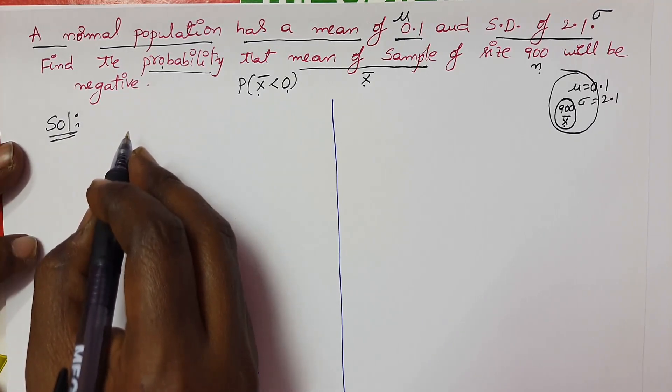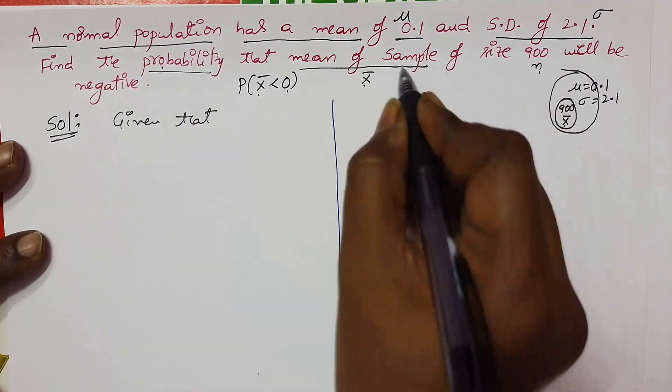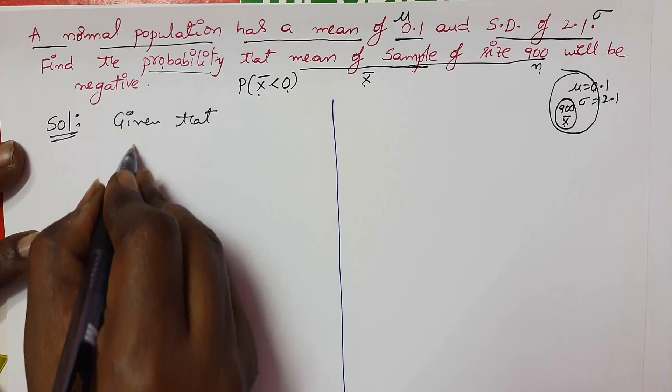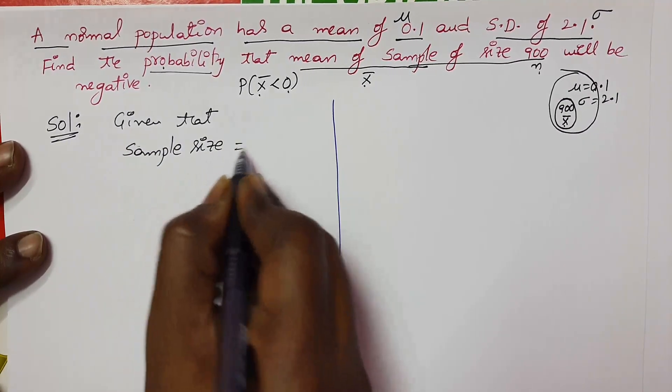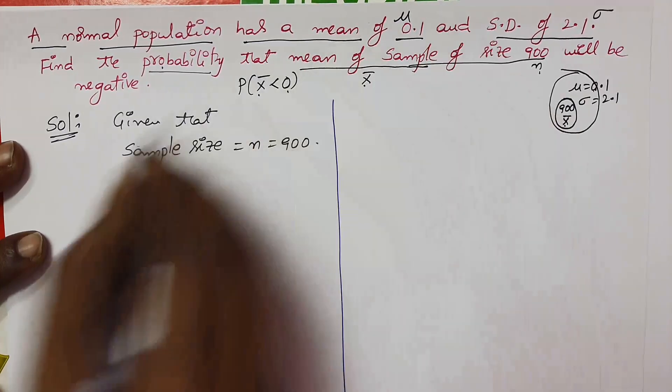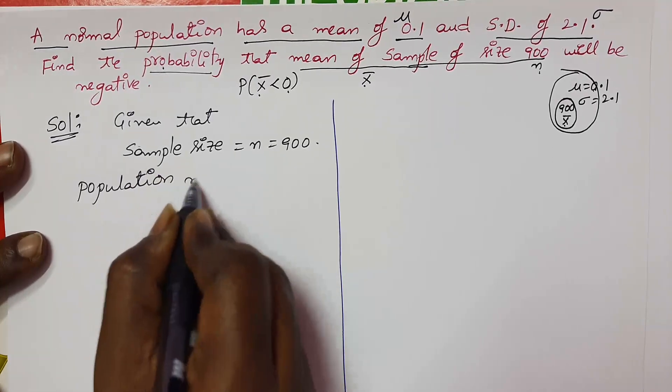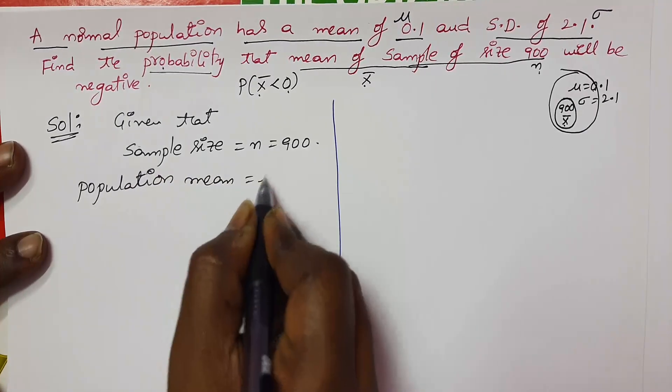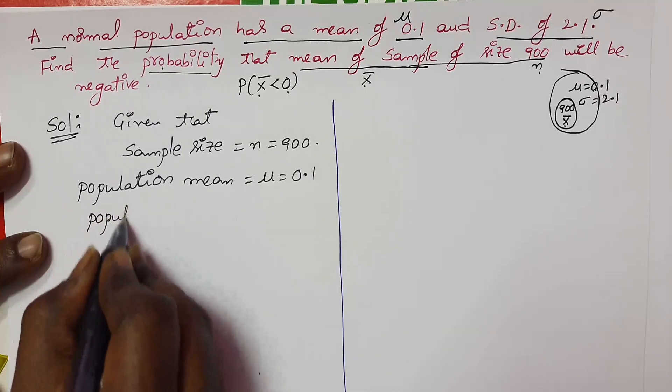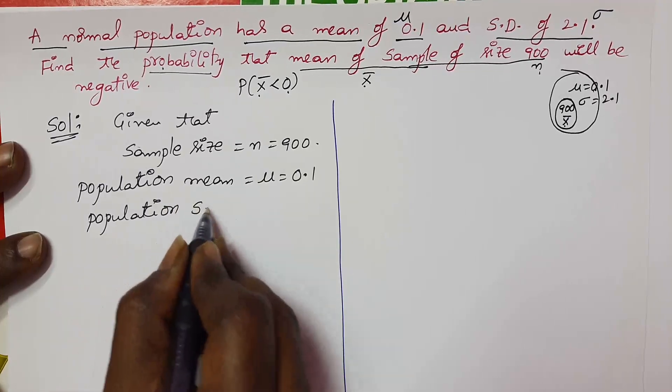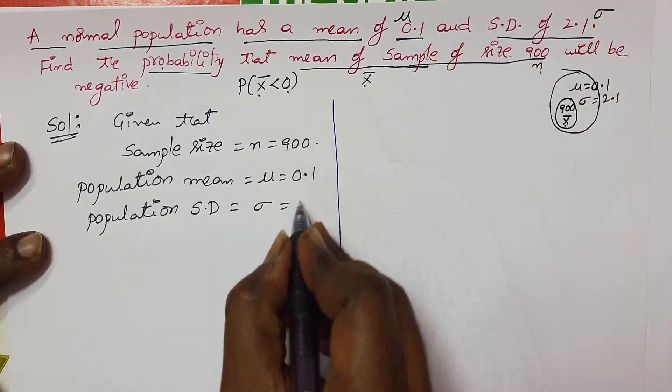So first of all we have to write the given data. Given that: sample size is represented with the letter small n, which equals 400. And population mean μ equals 0.1, and population standard deviation σ equals 2.1.